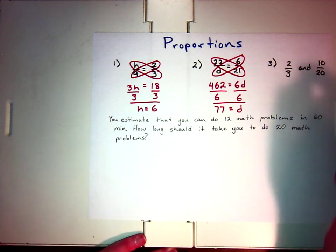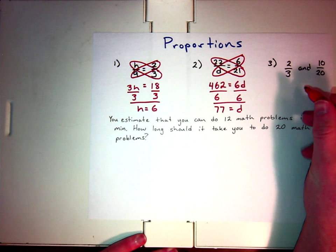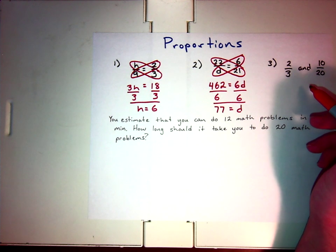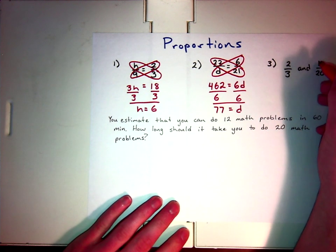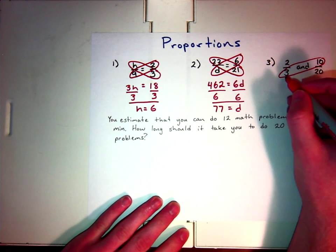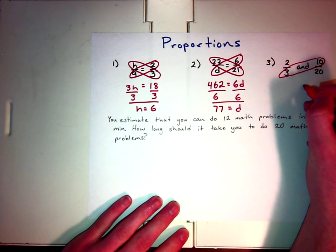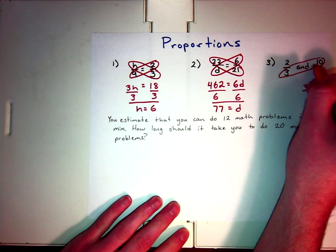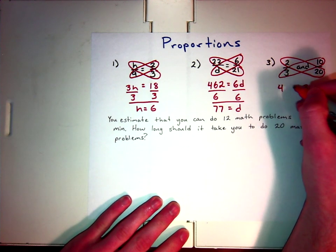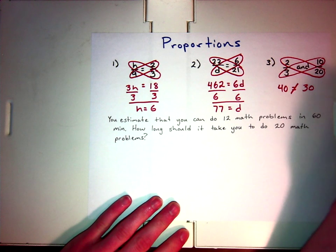You might also see some problems where they say, are these two fractions or rates proportionate? And all you need to do to test this, if you don't see it already, is you need to cross multiply, just like we've been doing. So, we take 3 and 10. Well, 3 times 10 is 30. And 2 times 20 is 40. So, are these equal? No, they are not.